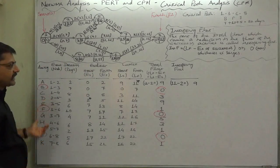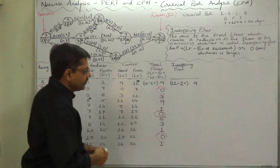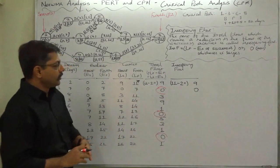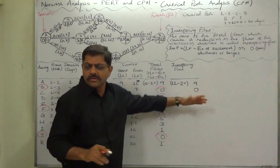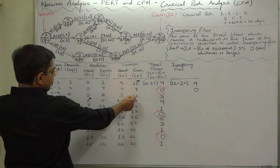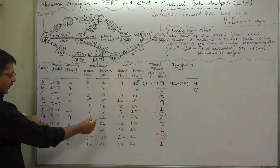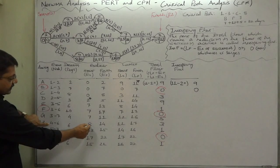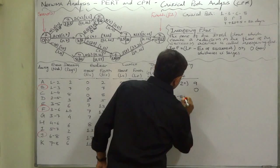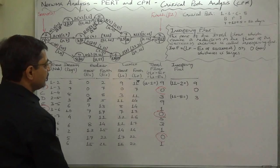In case of B, B is a critical activity, so its total float is 0. All components of total float must be 0, so we are not going to write anything, or if you write 0, it is also correct. C: latest finish time is 11. Successor of C is H, and earliest start time of H is 8. 11 minus 8, that is 3.